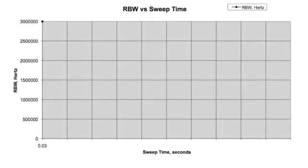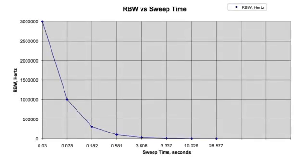There is a trade-off between sweep speed and resolution bandwidth selection. The wider the RBW, the faster the sweep.